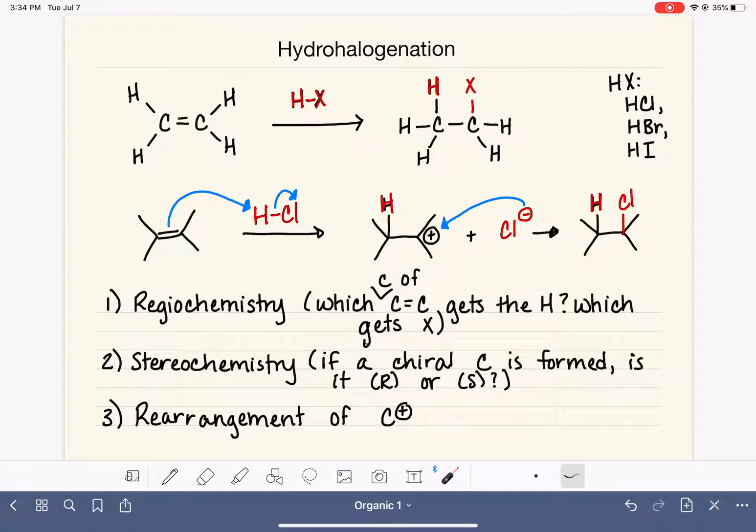We are looking at the hydrohalogenation reaction, which is a reaction where we are doing addition to an alkene, specifically adding HCl, HBr, or HI to the alkene.